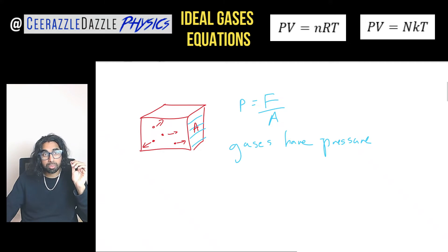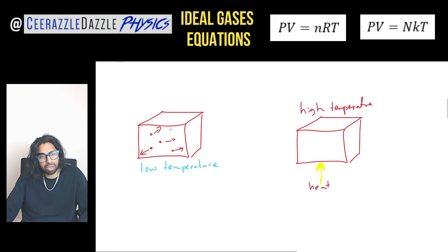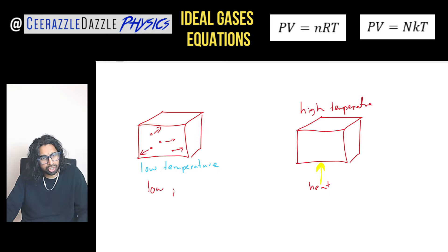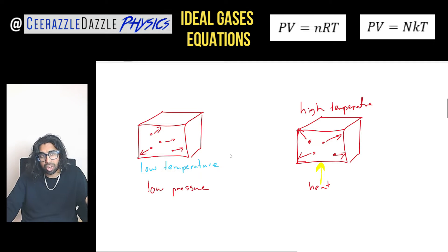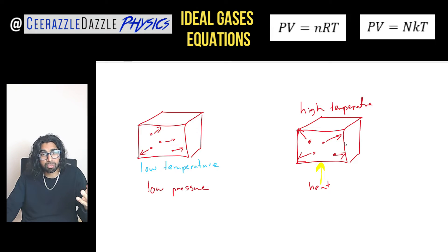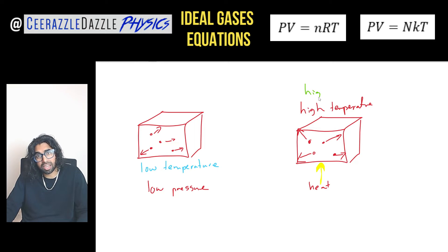Now let's talk about the relationship between temperature and pressure. What happens when you increase the temperature of a gas? On the left we have a gas at low temperature with low pressure. If we keep everything constant except temperature and increase it, the particles gain kinetic energy and travel faster. As they travel faster, they collide more often with the walls — more collisions per second means a greater force per second and therefore a greater pressure. High temperature gives high pressure.